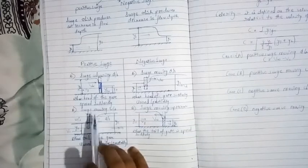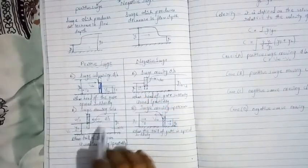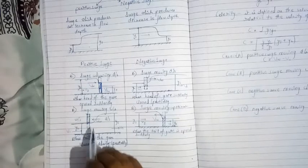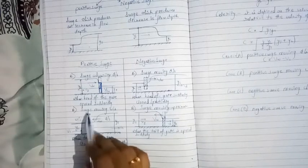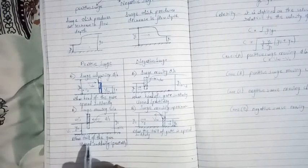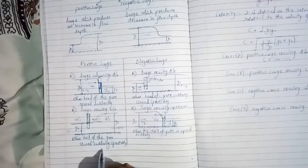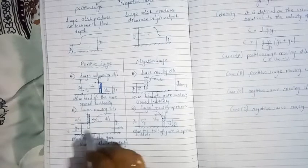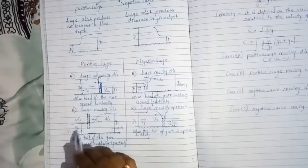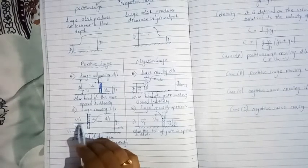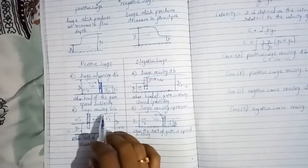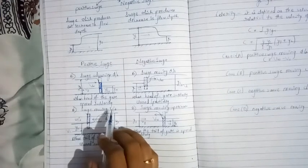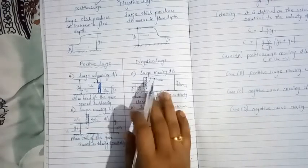The second case of the positive surge: suppose this is the surface of the channel and this is the gate. If the gate is closed suddenly or partially closed suddenly, then the wave tries to move toward the upstream side and it creates a positive surge moving upstream.